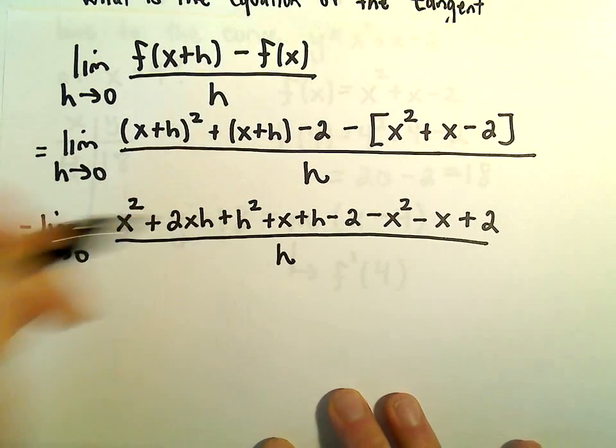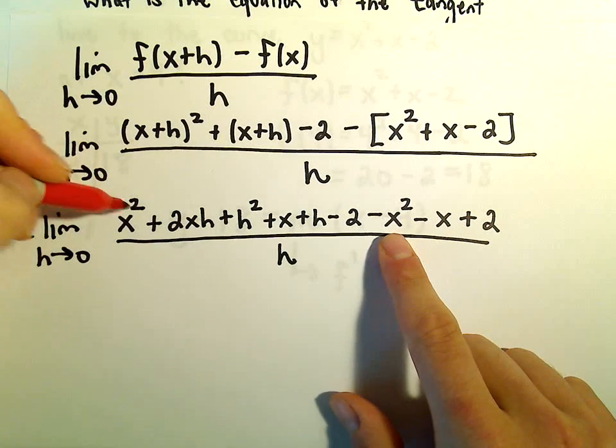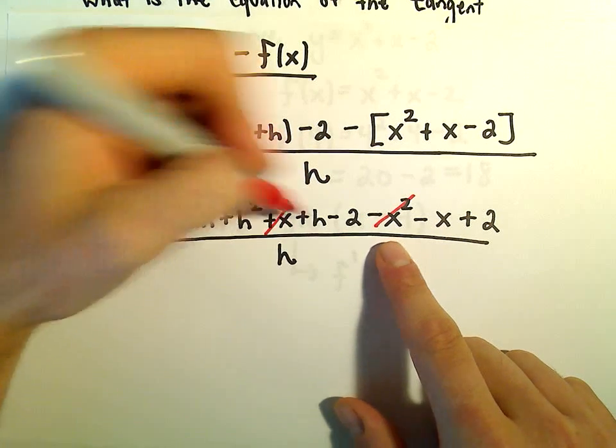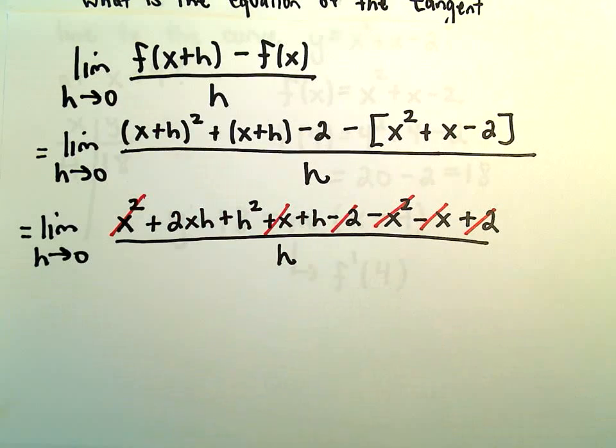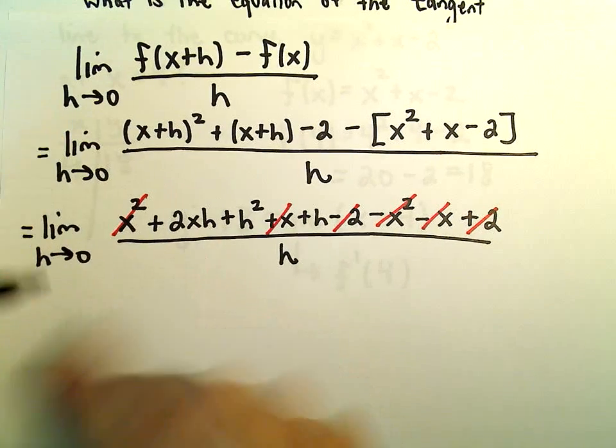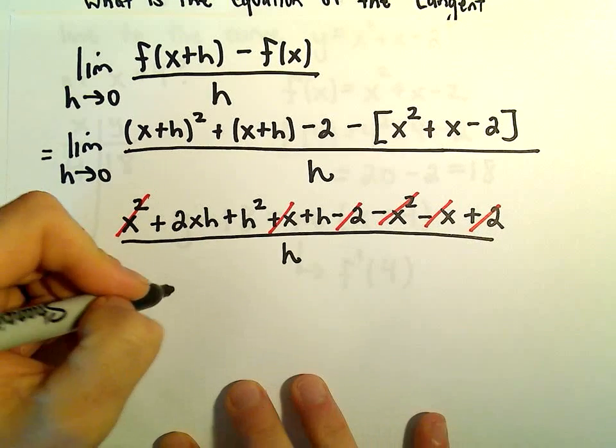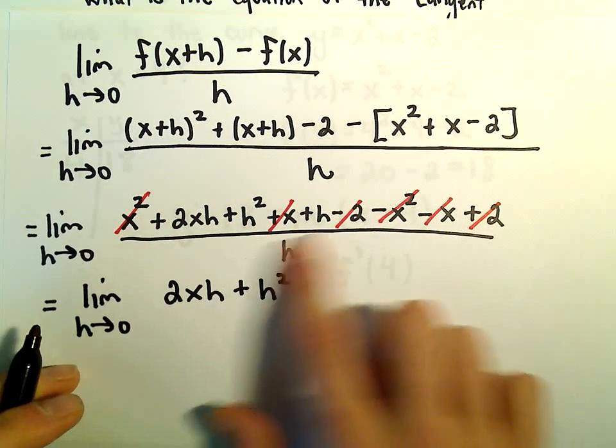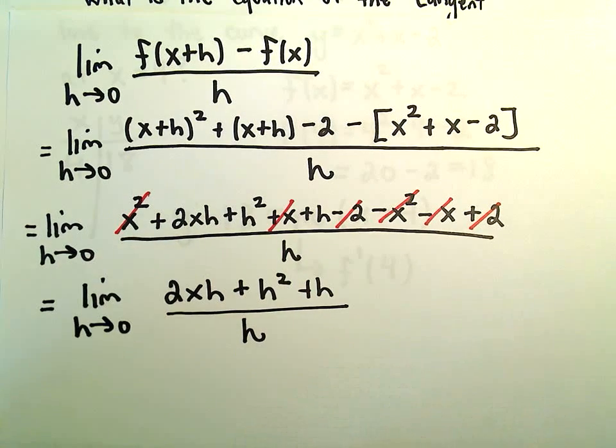And this is all being divided by h. So everything that doesn't have, that's not being multiplied by h, should cancel out. So positive x squared and negative x squared, that's gone. Positive x and negative x, that's gone. Negative 2 and positive 2, that's also gone. So it looks like the only thing that we're left with in the numerator. We've still got our 2xh hanging out. We've got our plus h squared left over. And then we have our plus h left over. All being divided by h.